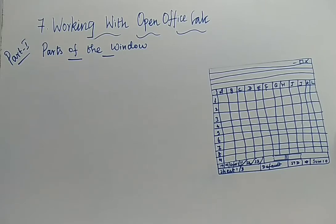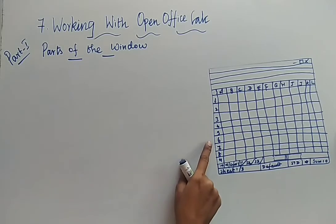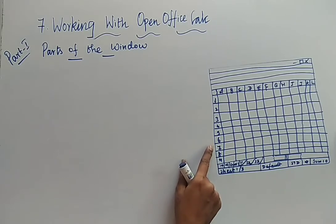We can continue with the parts of the window. After opening OpenOffice Calc, you are going to have a new spreadsheet just by clicking File, New, Spreadsheet. Immediately a window will be opened similar to this one, and your spreadsheet will be opened.